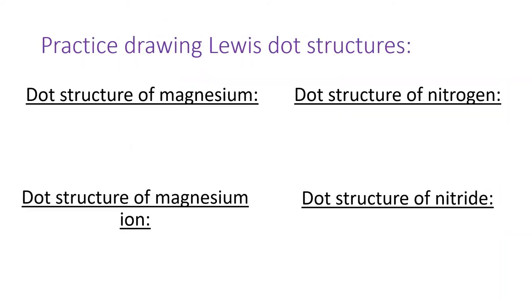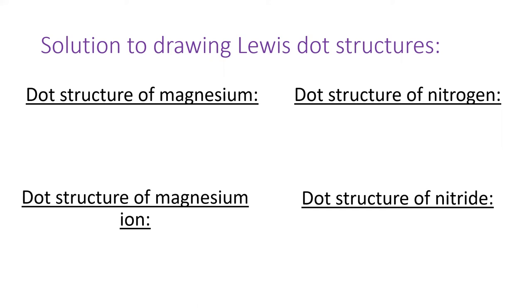Okay, time to practice. Draw the Lewis dot structure for these four species. To solve this problem, you have to find the element on the periodic table and give it the number of dots corresponding to its valence electrons, indicated by the column number. Remember, you skip over the transition metals in the d block.